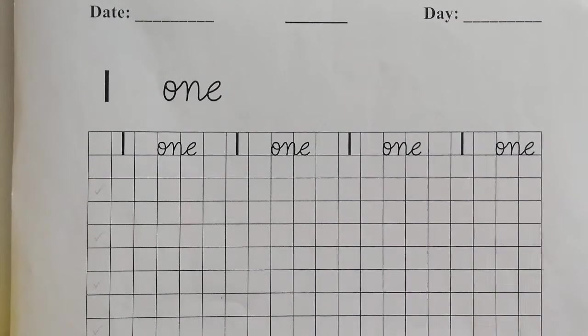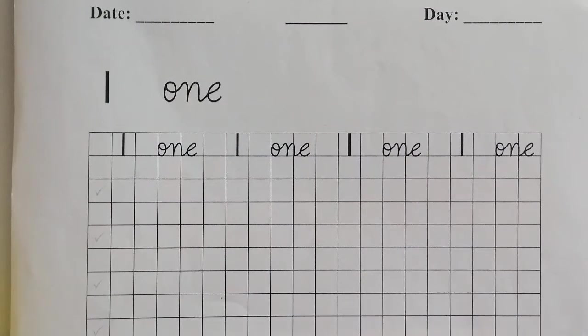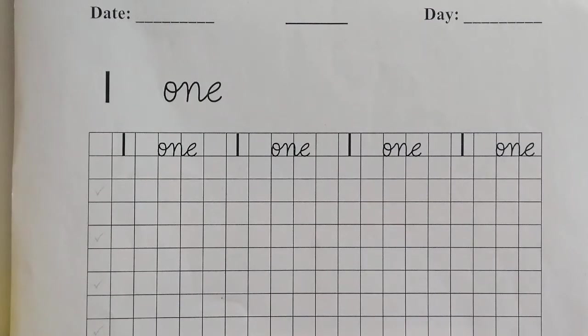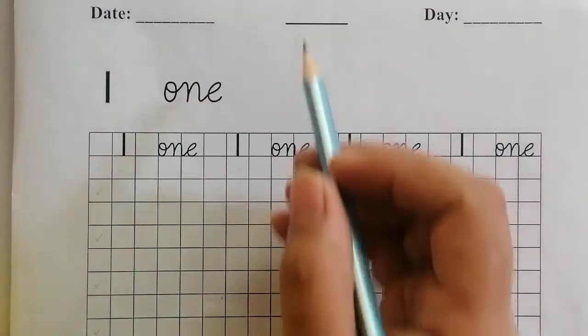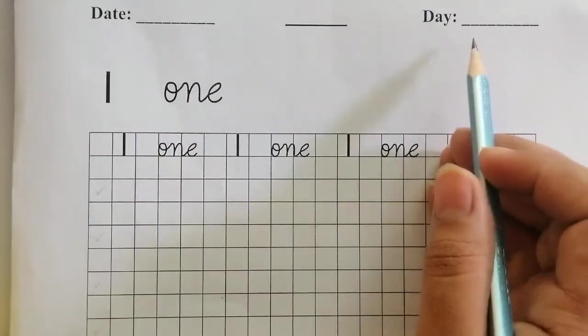Assalamualaikum dear Nursery class, how are you? Today we are going to solve page number 16 from math second and third term printed copy. First of all, mention CW, date and day.